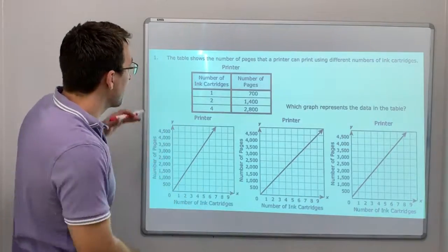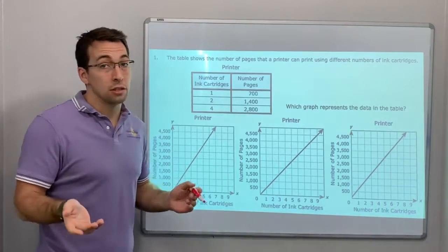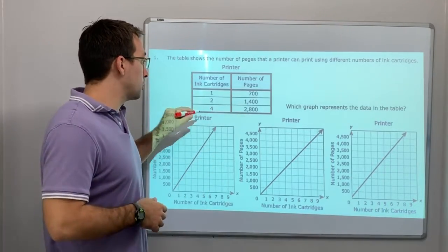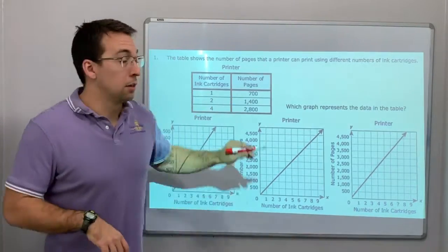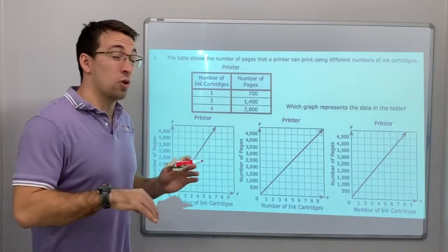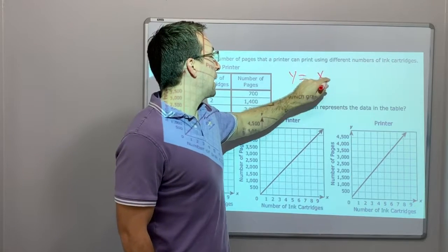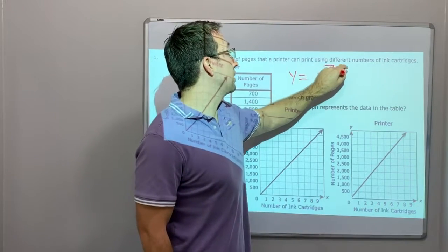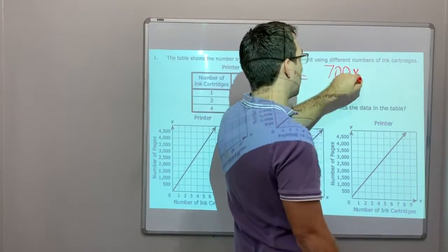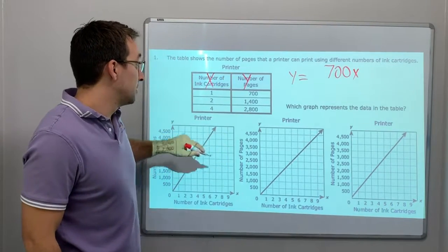Number one, the table shows the number of pages that a printer can print using different numbers of ink cartridges. So if you have this, y equals x times 700, or 700x. Look at this. We can call this an x value, and this is a y value.